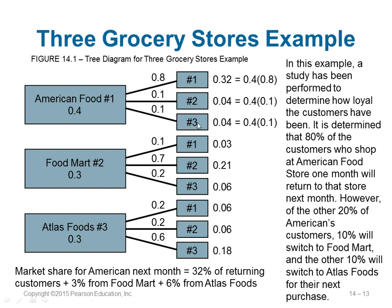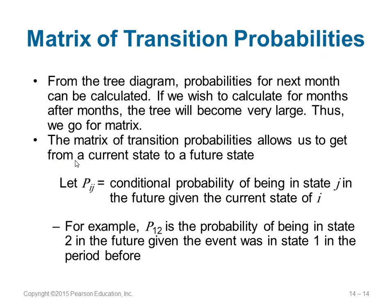So the probability changes: 0.4 times 0.8 gives 0.32; similarly 0.4 times 0.1 gives 0.04 for those going from American Food Store to Food Mart. These things are represented in the format of a matrix called the matrix of transition probabilities, which indicates how you transit from one state to another. We represent them in one single matrix and continue further.